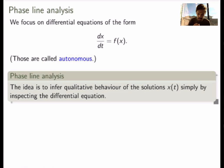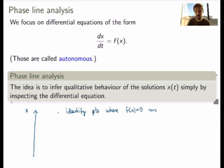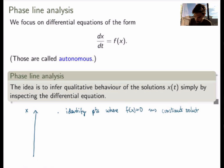So what is phase line analysis? The idea is to draw a vertical line called a phase line, which parameterizes all solutions x of the differential equation. On this line, we first identify points where f(x) equals zero. If the right-hand side is zero for a certain value of x, this provides a constant solution — also called an equilibrium solution — because both sides of the equation equal zero. These points give us the constant or equilibrium solutions of the model.